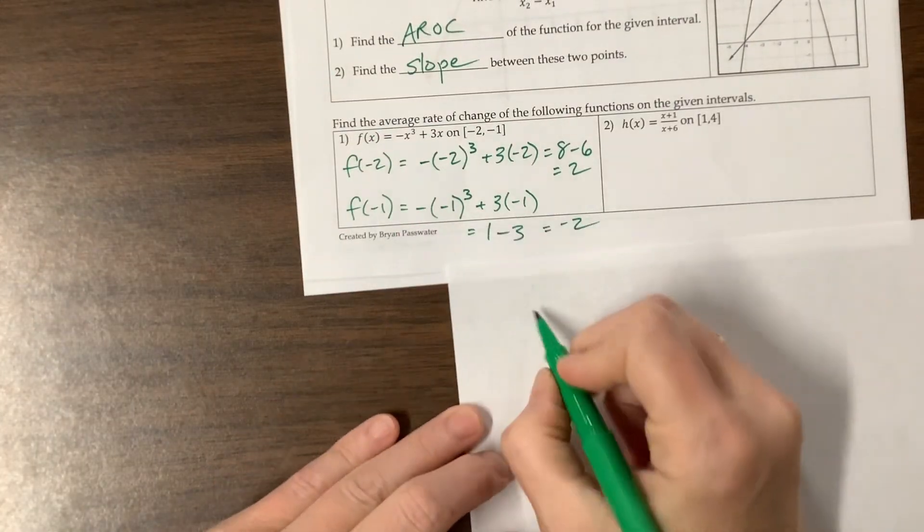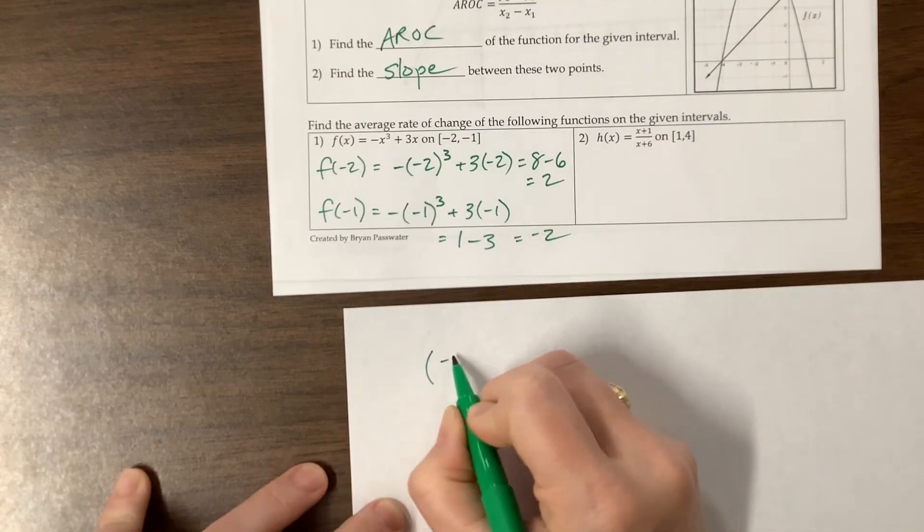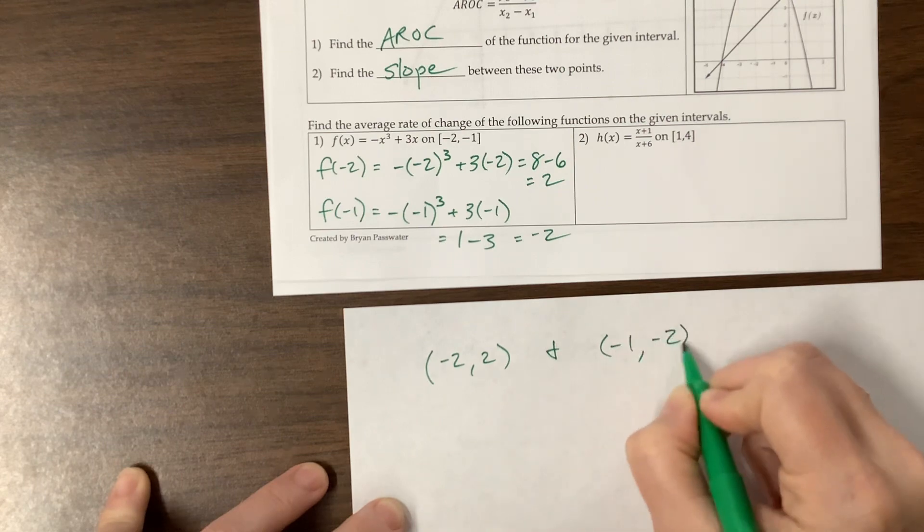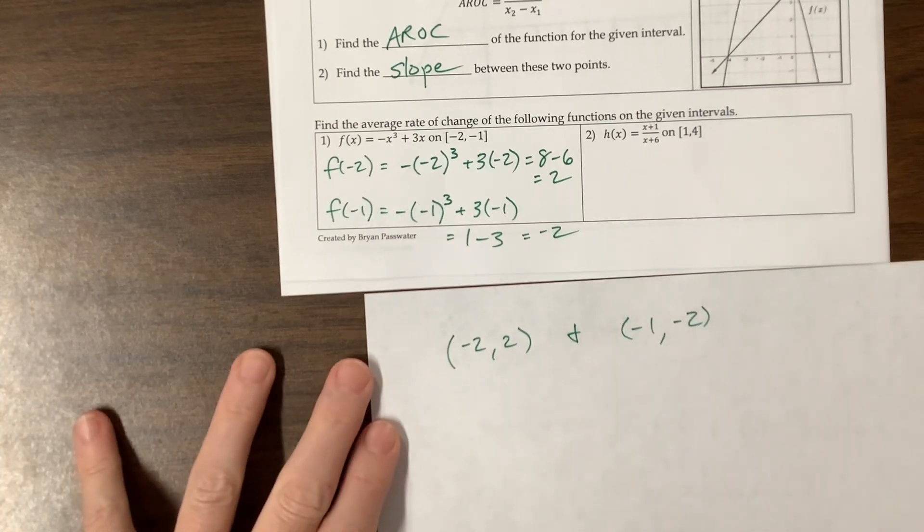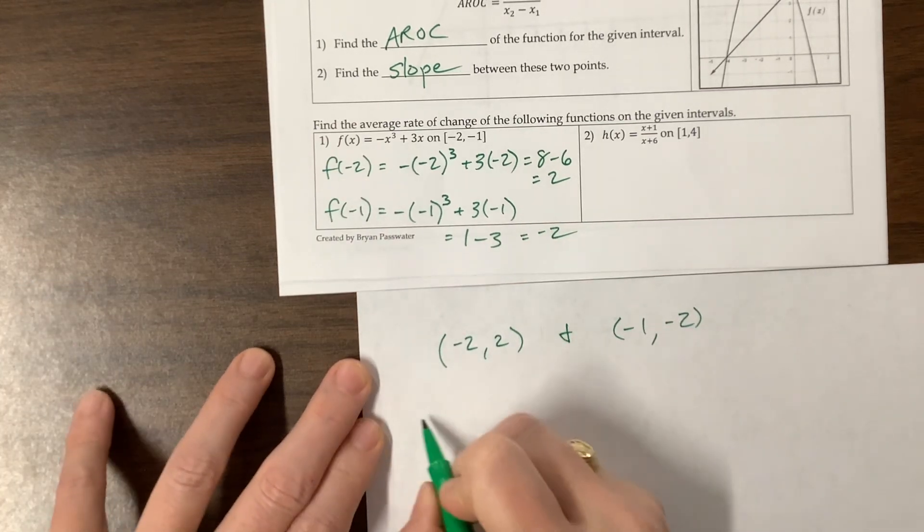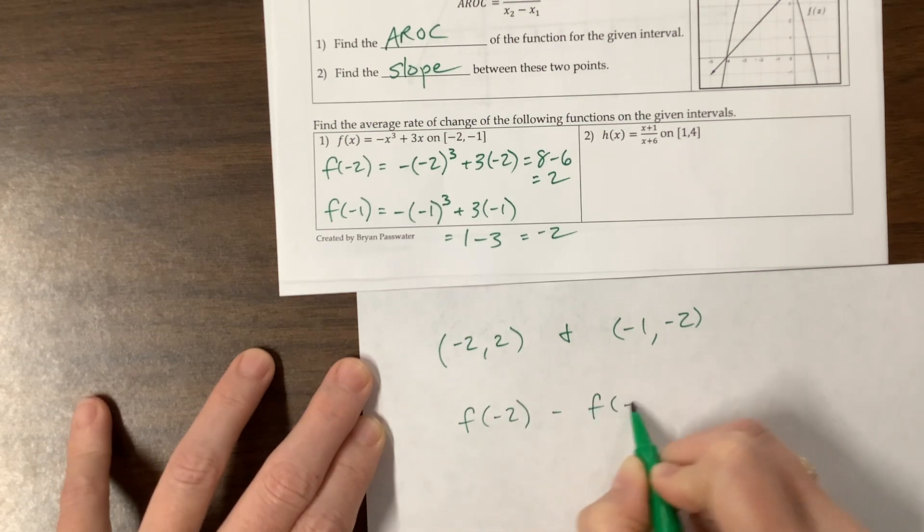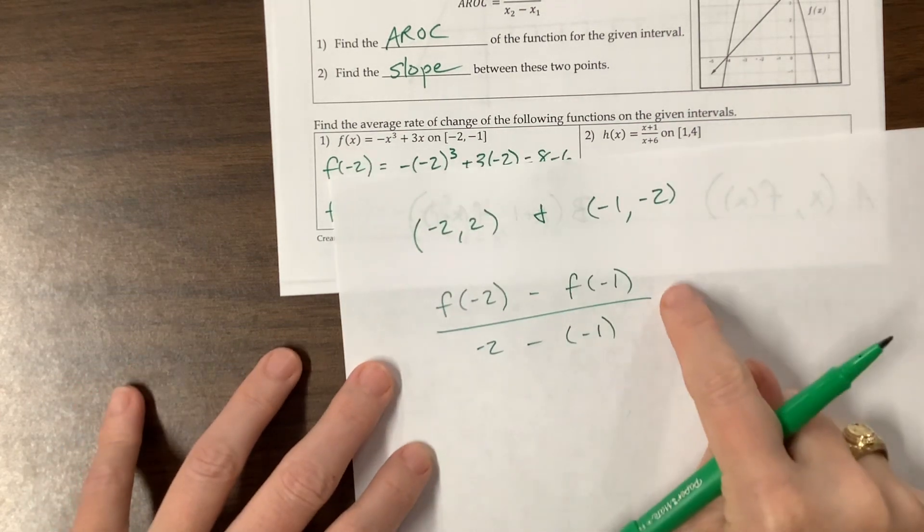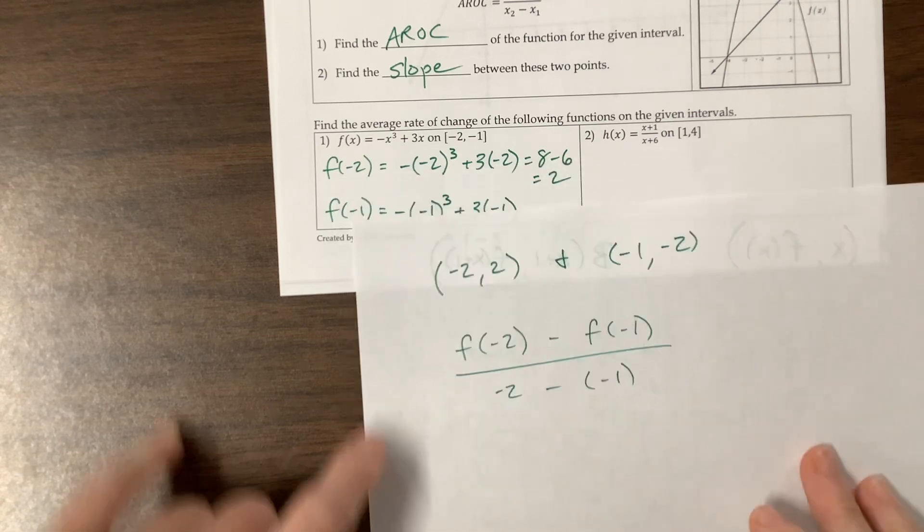So now I'm finding I have, basically I have these two points. I've got the point negative 2, 2, and the point negative 1, negative 2, right? Negative 1, negative 2. That was its x. There's its y. There's its x. There's its y. And I just want to find the slope. Or I could say it's f of negative 2 minus f of negative 1 over negative 2 minus negative 1 is another way to think through this. This actually might be more in line with what I've seen AP Precal do. f of negative 2, we just said, was 2.